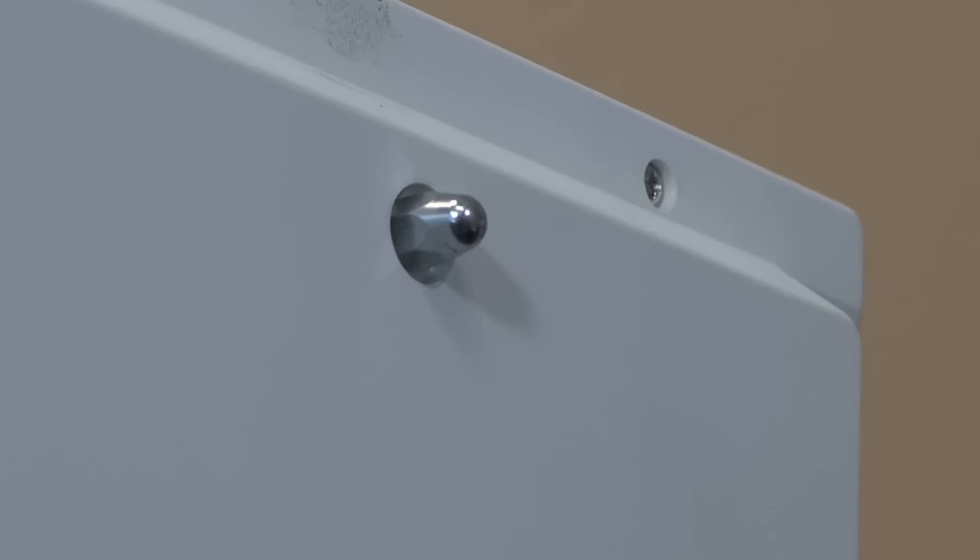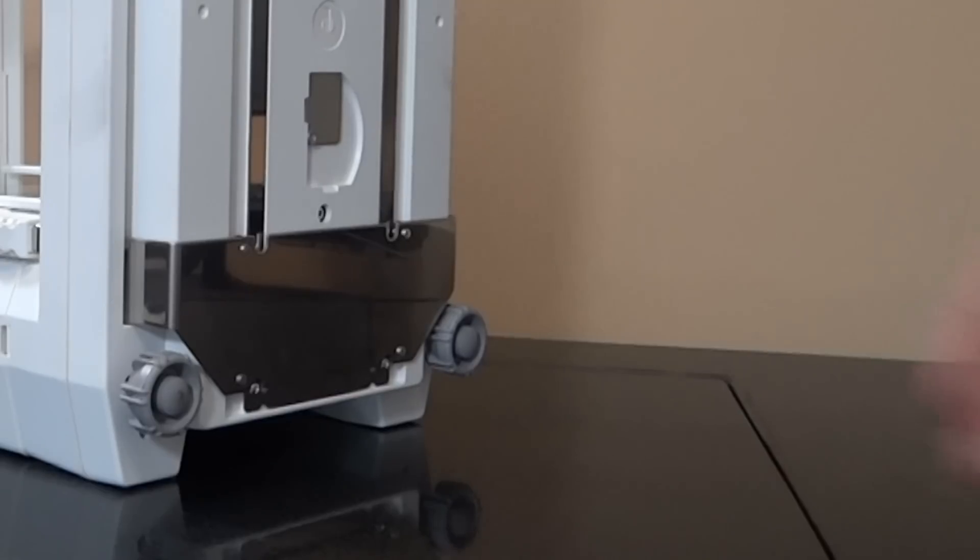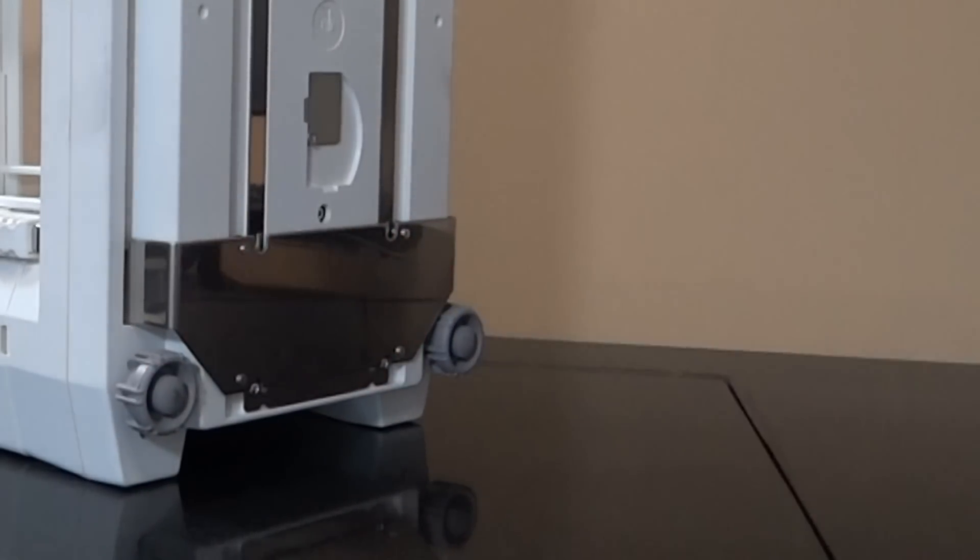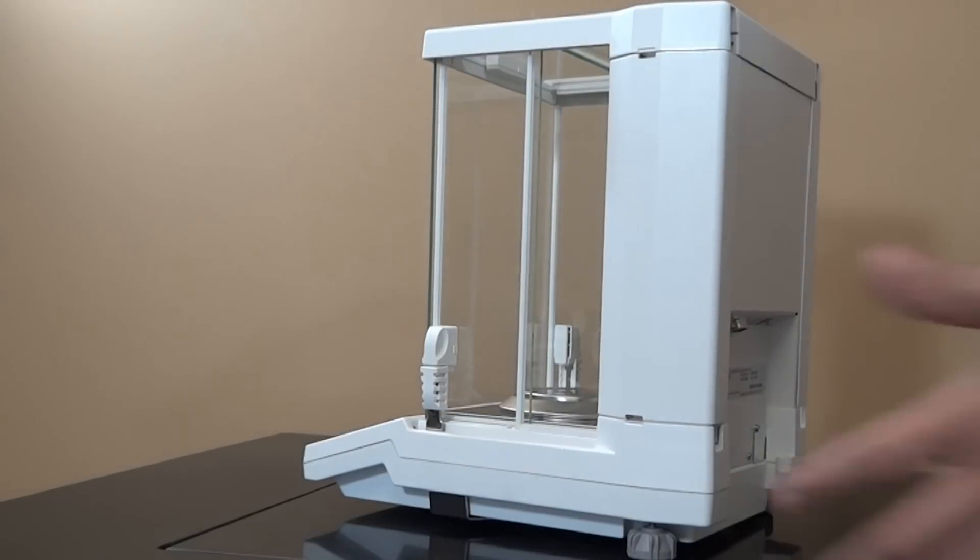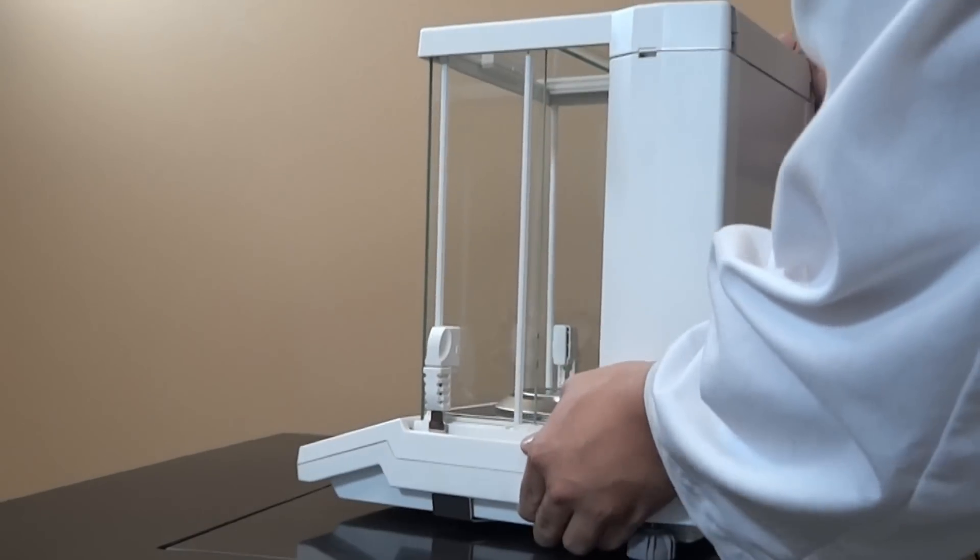Starting at the bottom of the balance, there are three support points, two of which are adjustable to provide leveling. The solid frame of the unit provides stability and robust construction to protect the mechanism.